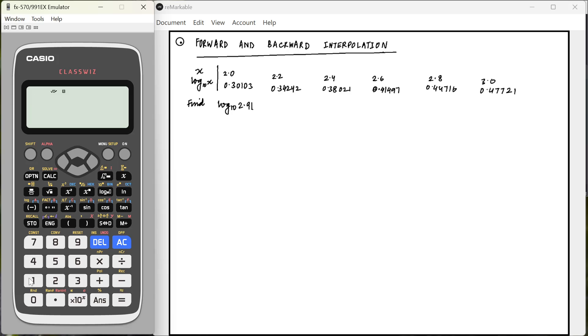So in interpolation problems, we are typically given some values of x and some values of f of x and we need to find the value of f of x at some other x. So here values of x are given at 2, 2.2, 2.4 and so on, and their corresponding values are given as well. And we need to find log of 2.91 based on this.